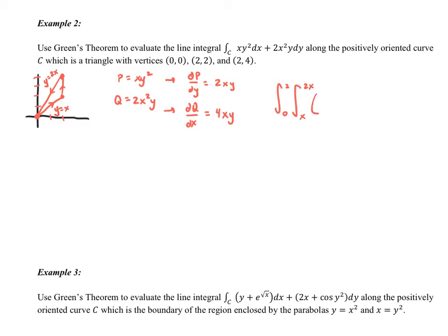Inside Green's Theorem says that we take ∂Q/∂x, which is 4xy, and we subtract ∂P/∂y, which is 2xy, and we've set this up as a dy dx order.